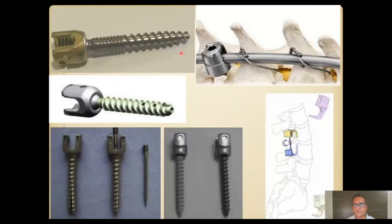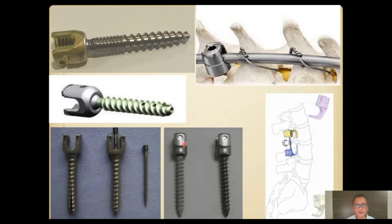In terms of fixation options, pedicle screws are available in many forms. You have dual-threaded screws which improve pullout strength, fenestrated screws with fenestrations inside the pedicle screw, and cannulated screws where you can inject cement to increase pullout strength. There are also expandable pedicle screws where the tip expands after inserting a plunger to improve hold, and hydroxyapatite-coated screws. Traditional implants that use the strongest bone in the osteoporotic spine — the lamina — include sublaminar wires, the Hartshill rectangle, pedicle hooks, and laminar hooks. These are important modalities not to be forgotten.